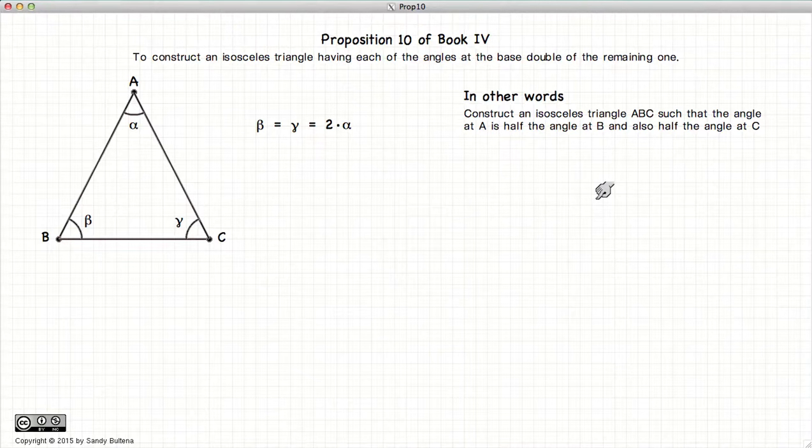In this proposition we are going to show the methods required to draw a very special kind of isosceles triangle. Now since an isosceles by definition beta is equal to gamma, what makes this isosceles triangle different is that beta is twice the angle of alpha and similarly gamma is also twice the angle of alpha. So this is what we wish to construct.